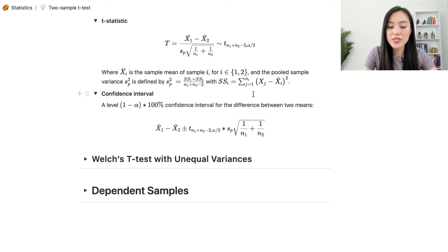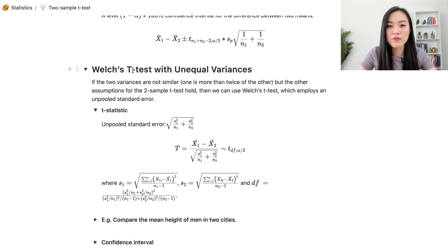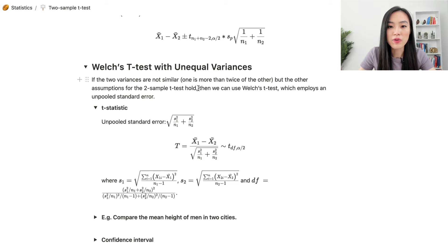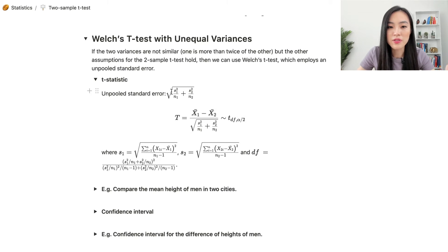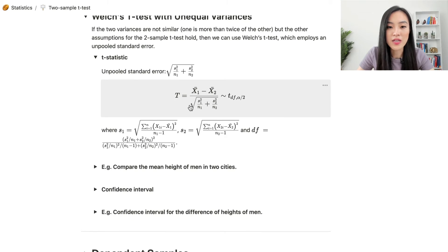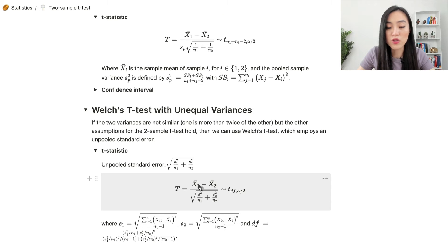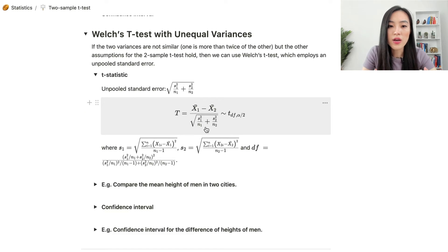Now let's look at Welch's t-test for unequal variances. If the two variances are not similar — one is more than twice the other — but the other assumptions hold, we use Welch's t-test, which employs an unpooled standard error. The unpooled standard error is sqrt(s1²/n1 + s2²/n2), and the test statistic becomes (x1-bar - x2-bar) / sqrt(s1²/n1 + s2²/n2). The numerator is the same as the equal variance scenario, but s1 and s2 are computed separately.